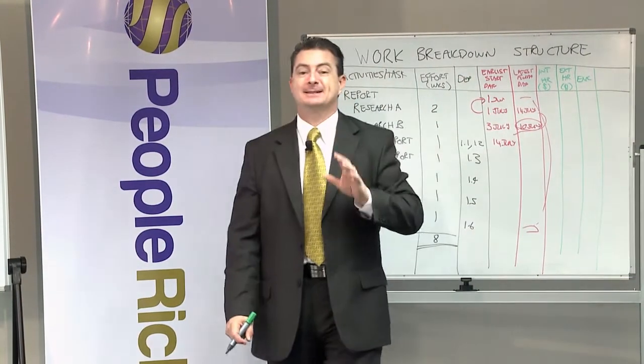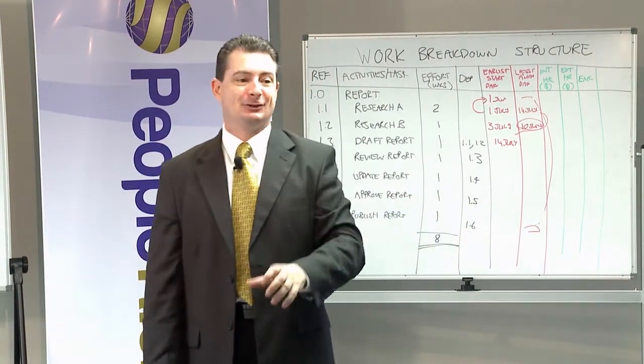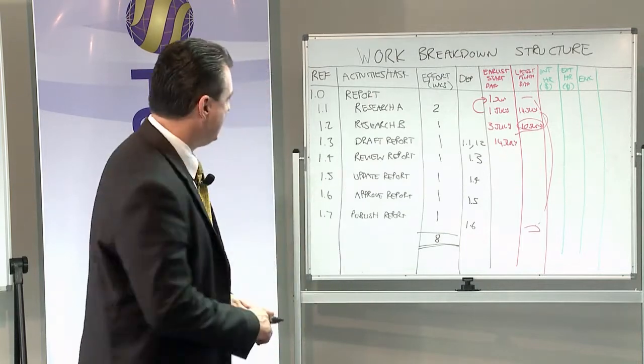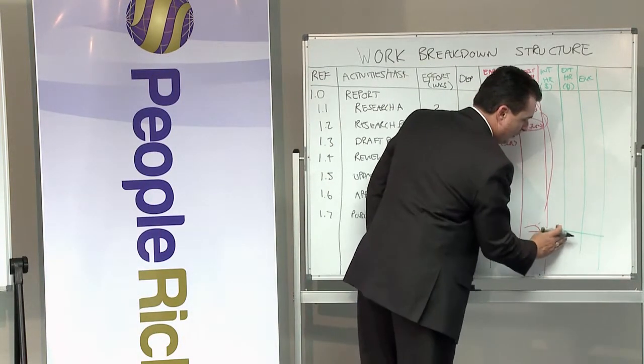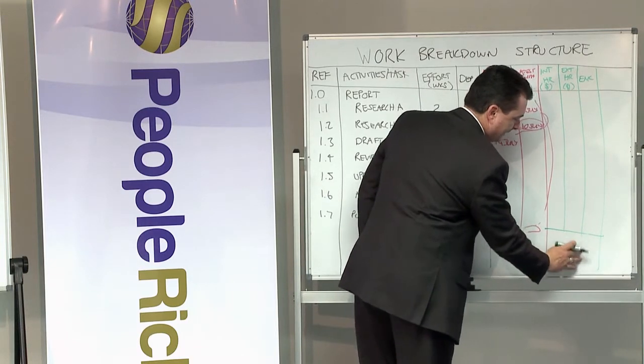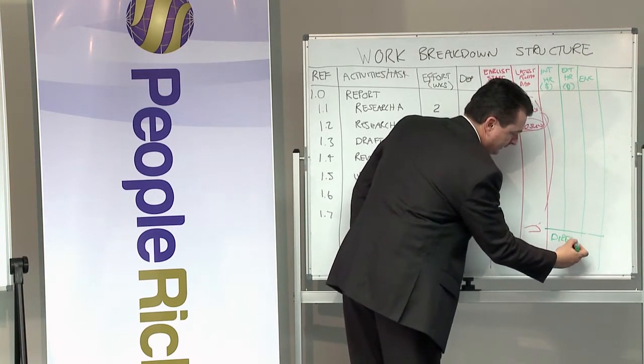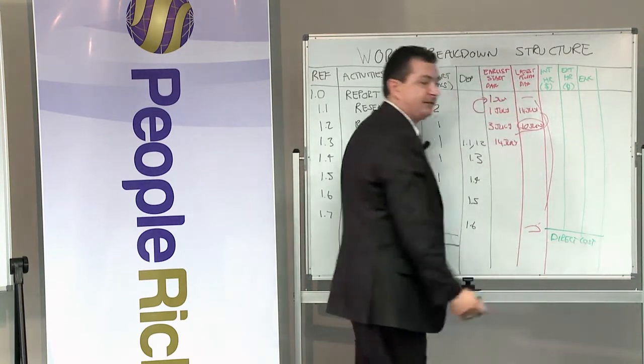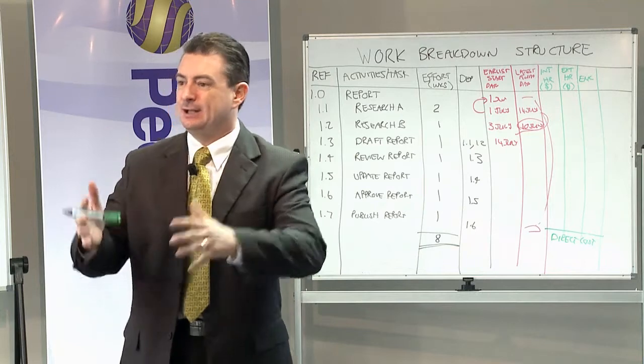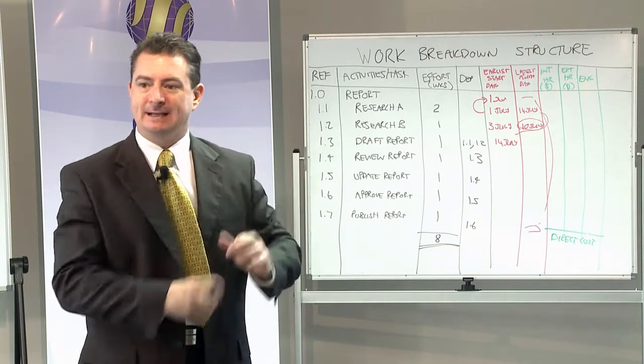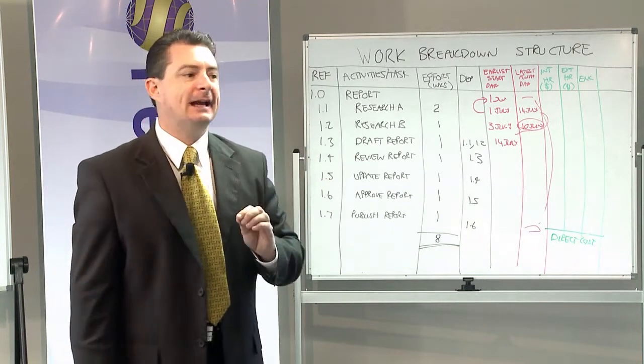If anyone didn't get to write down EMC, it stands for Equipment, Materials, Consumables. Now once I get to the end of adding all these up, we call this in project management our direct cost. So the direct cost is effectively anything that's on the work breakdown structure because I needed it, directly attributing to tasks.